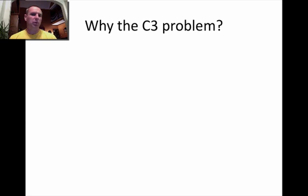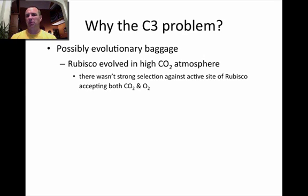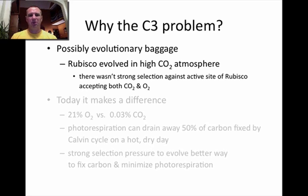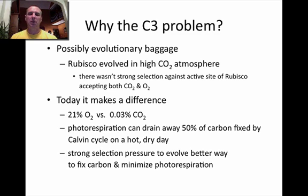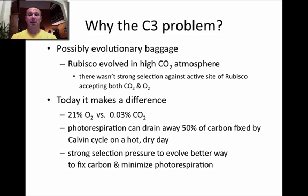So why does the C3 problem exist in the first place? Possibly because of evolutionary baggage. A long, long time ago, carbon dioxide was prevalent before photosynthetic organisms started appearing on Earth, so rubisco didn't have to worry about distinguishing between oxygen and carbon dioxide. It evolved in a high carbon dioxide environment. Today is very different — we have about 21% oxygen in our atmosphere and only about 0.03% carbon dioxide. Photorespiration is not a good thing for a plant: it can drain away 50% of the carbon fixed by the Calvin cycle on hot, dry days, eliminating the plant's food supply. I hope this helps, and we're done with photosynthesis — have a wonderful day!